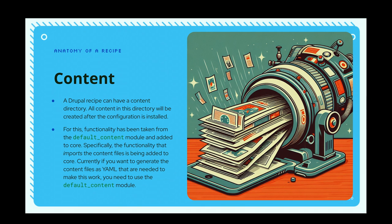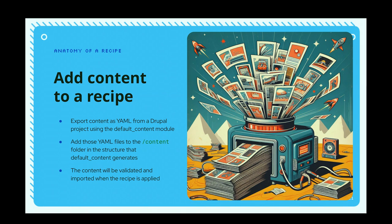There is also the ability to include content in recipes. The recipe system includes import capabilities that were previously in the contrib Default Content module. By having content YAML files in your recipe, those get automatically imported when you apply it. I find the Default Content module is the easiest way to export those from an existing site — it spits out YAML files grouped into subdirectories based on entity type ID — then you put those directly into your recipe.